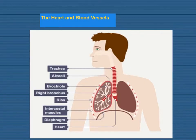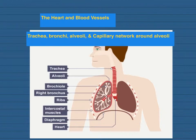The next section is related to the heart and blood vessels. Looking at this picture, this is showing the breathing system. You do need to know a bit about the lungs. The specification mentions that for the lungs you need to know about the trachea, the bronchi, the bronchioles, the alveoli, and the capillary network around the alveoli.